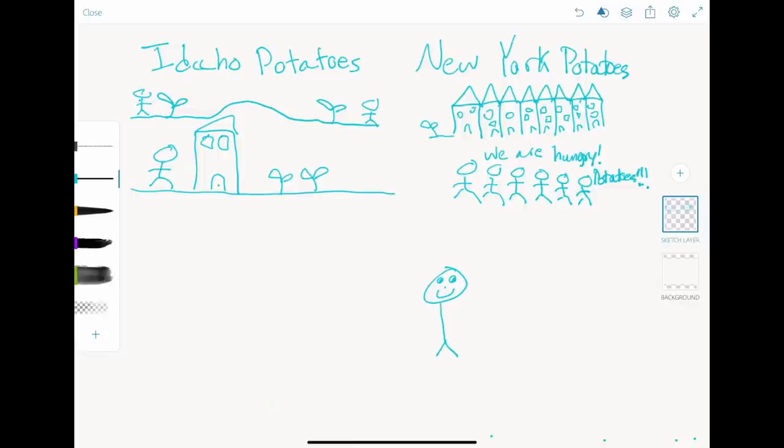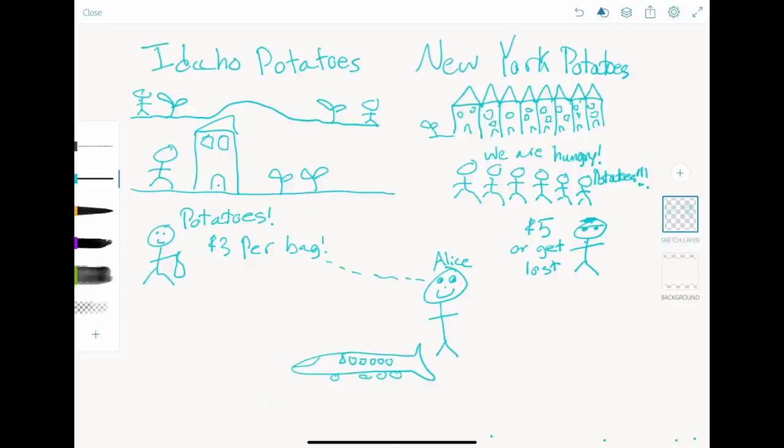Arbitrage actor Alice sees this as an opportunity to make easy, low-risk profit. In the Idaho potato market, a bag of potatoes can sell for as low as $3, whereas back in New York, Alice's hometown, the same bag would fetch any knowledgeable potato salesman $5 minimum. Alice packs her suitcase and gets on the next flight to Idaho. She will buy as many potatoes as she can to maximize her profits and cover her traveling expenses.